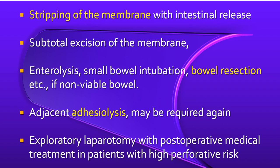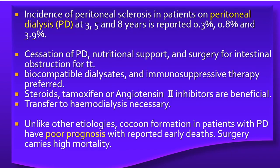Treatment is by stripping of the membrane, which allows intestinal release. Subtotal excision of the membrane is also performed at times. Enterolysis with small bowel intubation and bowel resection may be required if part of the bowel is non-viable. Adjacent adhesiolysis may be required in many cases. Explorative laparotomy with post-operative medical treatment in patients with high perforative risk is also recommended. In patients on peritoneal dialysis, incidence of peritoneal sclerosis at 3, 5 and 8 years is reported at 0.3, 0.8 and 3.9 percent respectively.